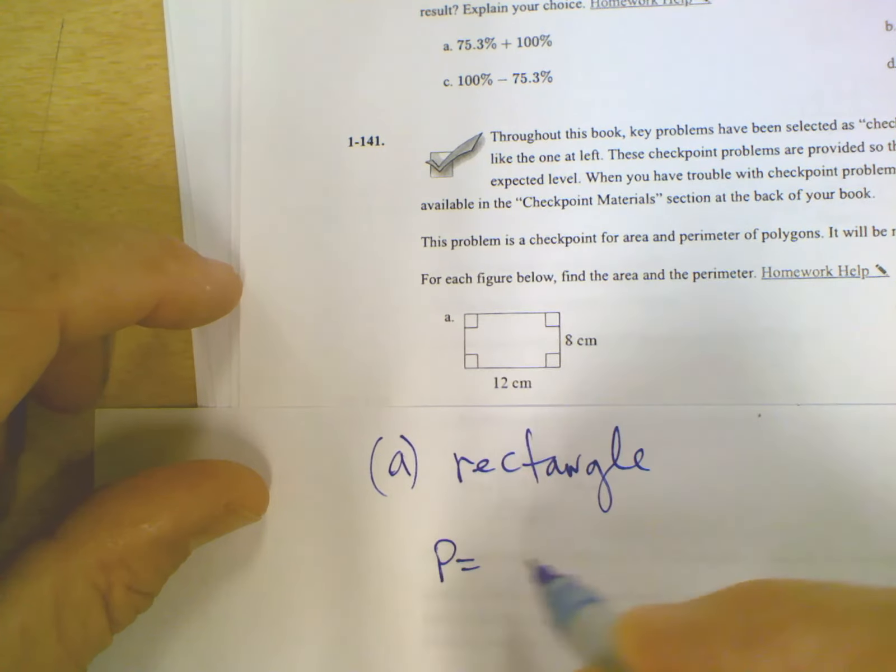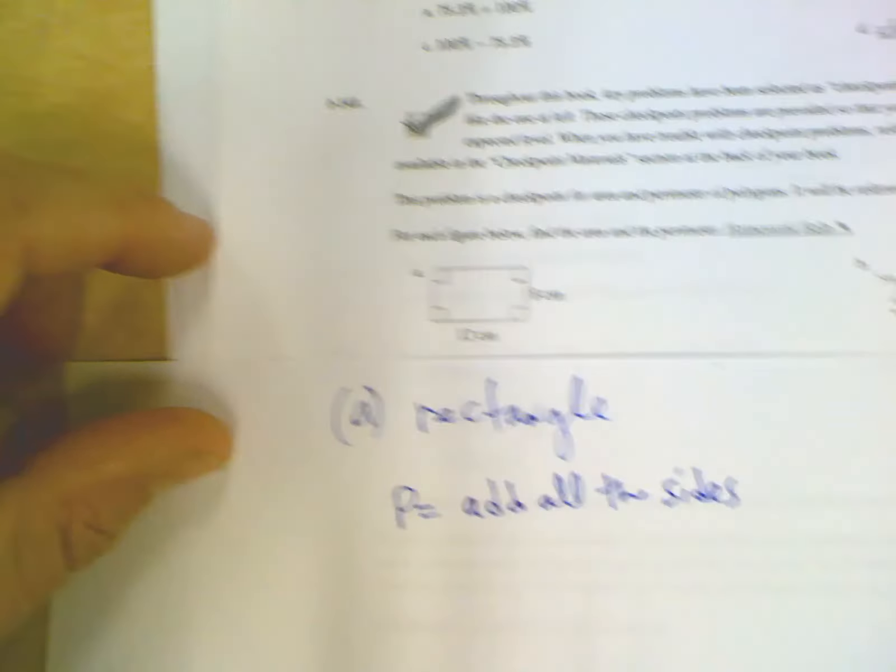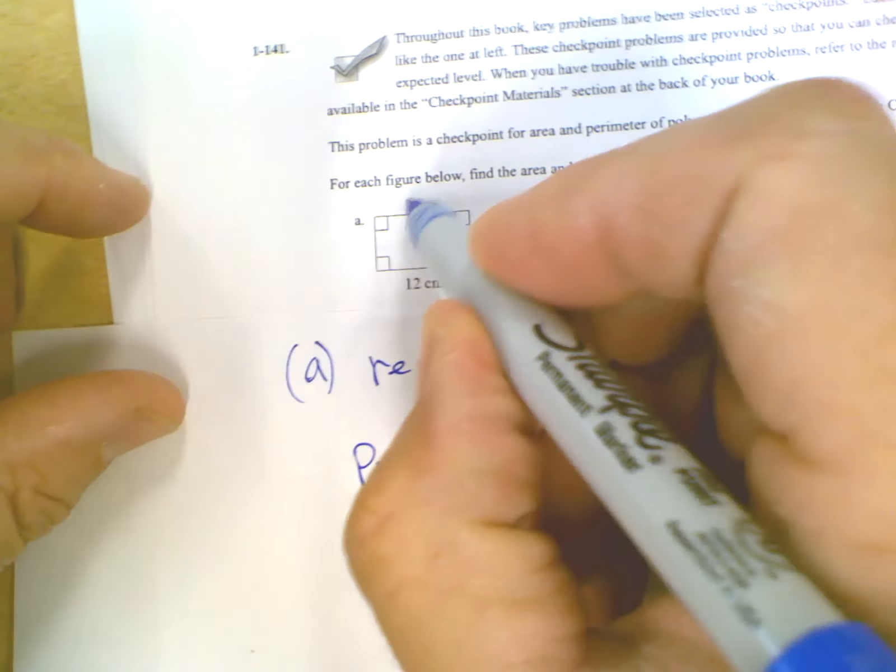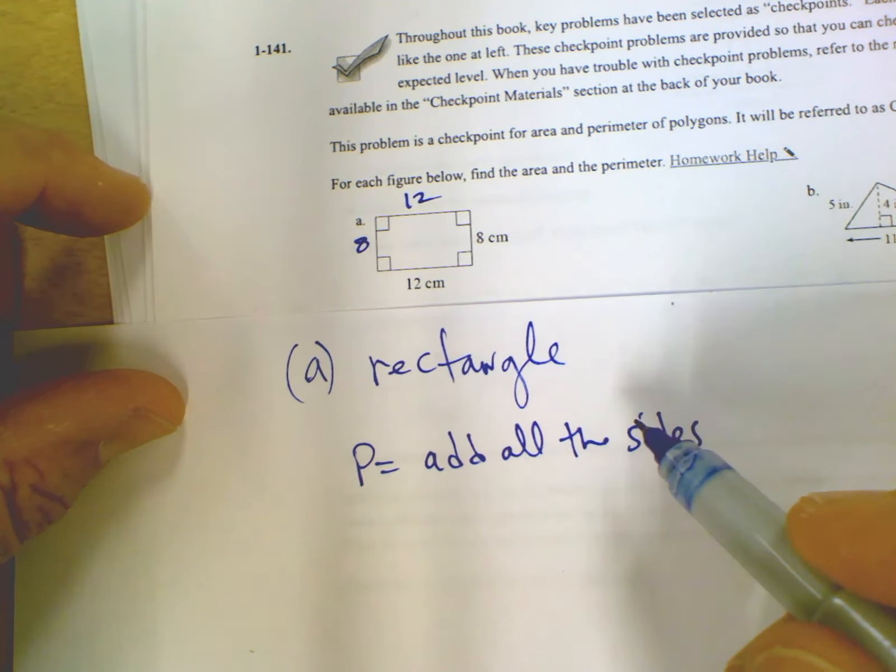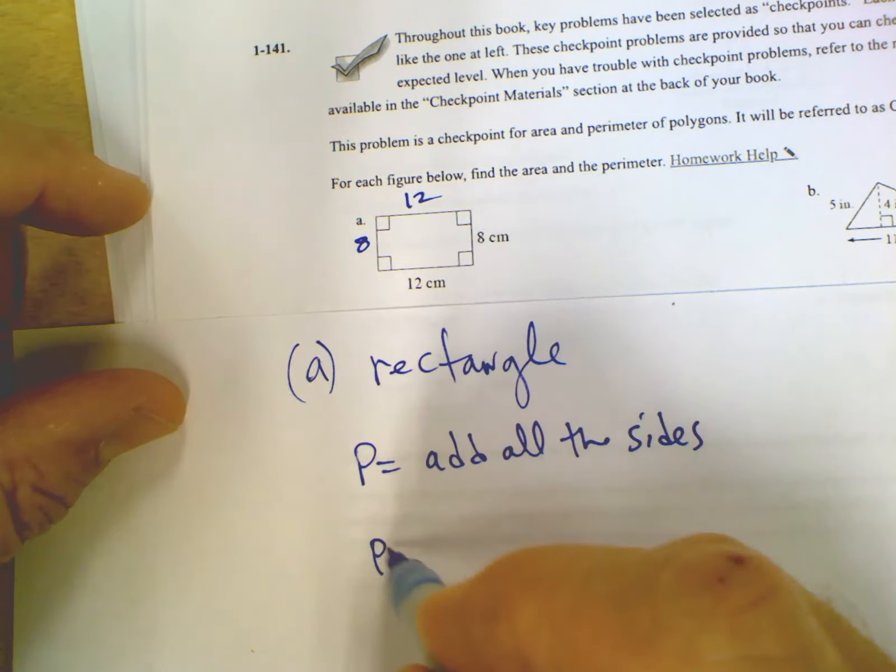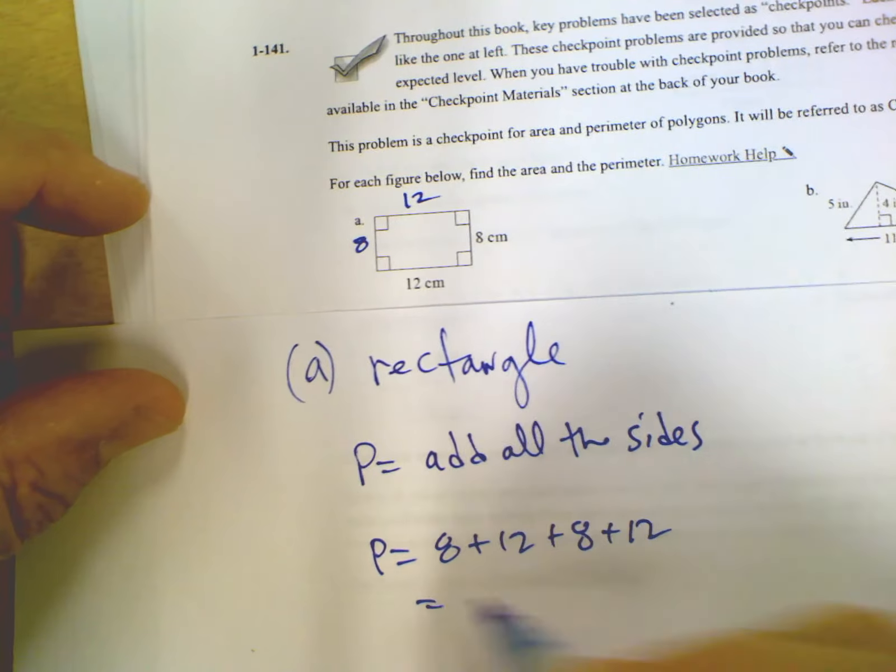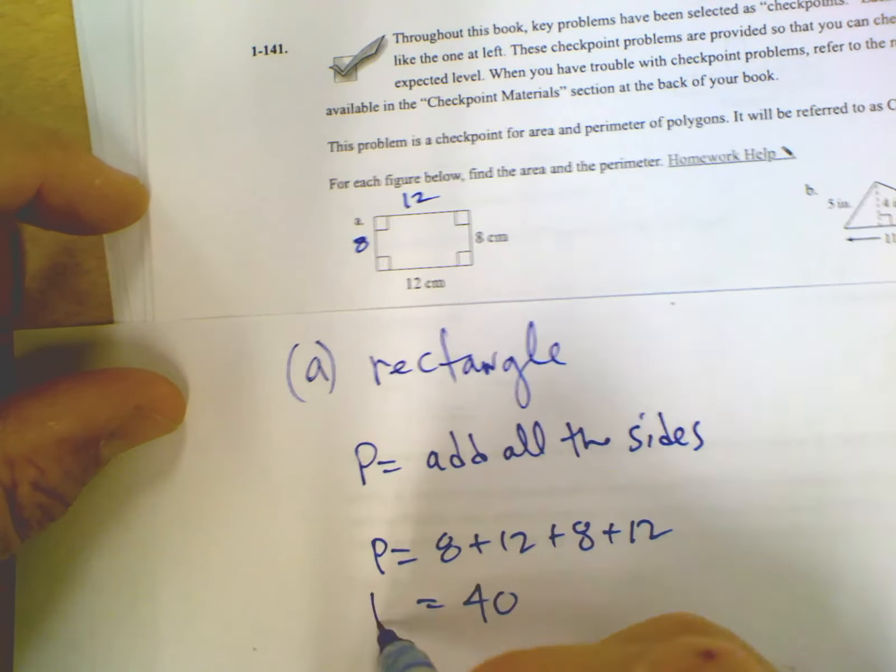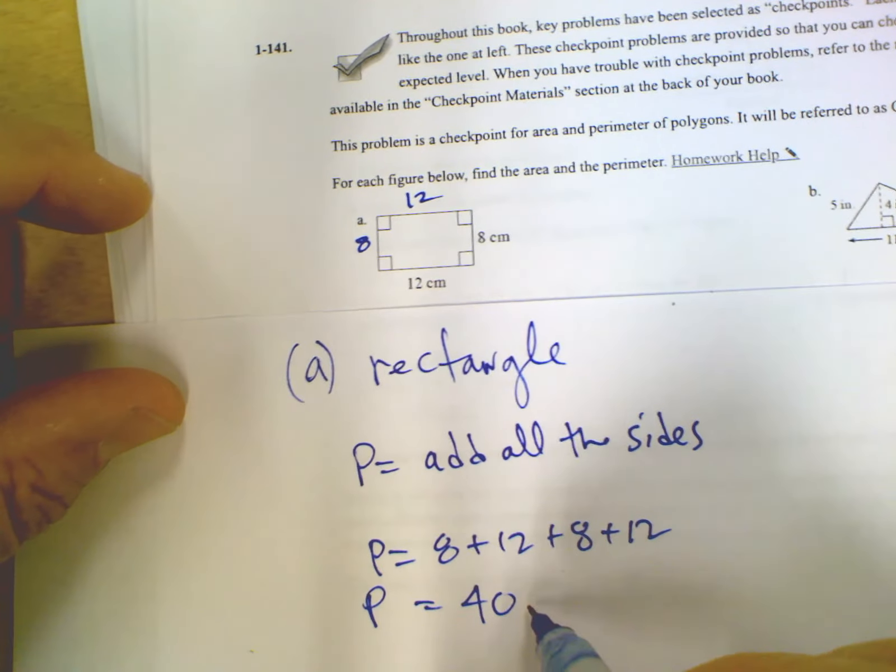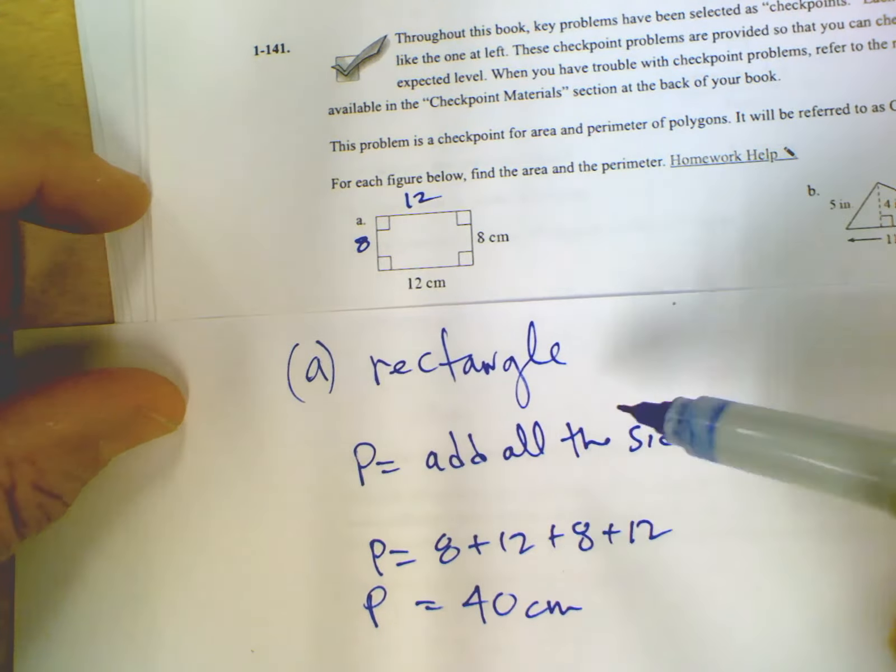To find the perimeter of a rectangle, you just add all the sides. I know that's 12, so opposite side would be 12. I know that's 8, so opposite side would be 8. So adding all the sides would be 8 plus 12 plus 8 plus 12, and my perimeter in this case is going to be 40. So that's the perimeter, and you put your units, and in this case units is centimeters, so the perimeter is 40 centimeters.